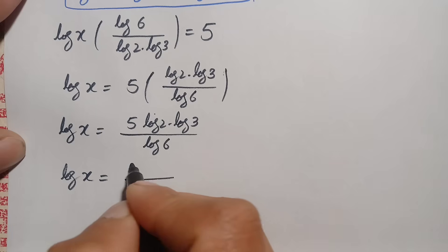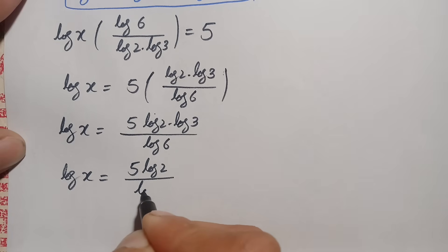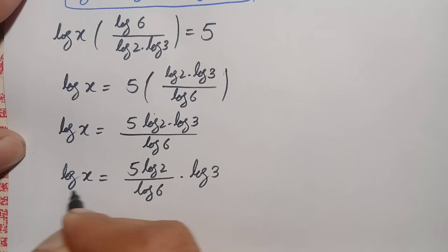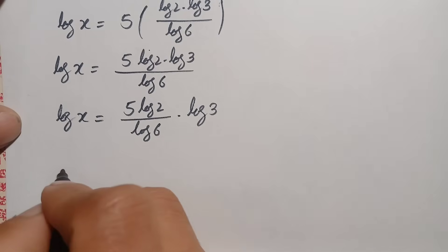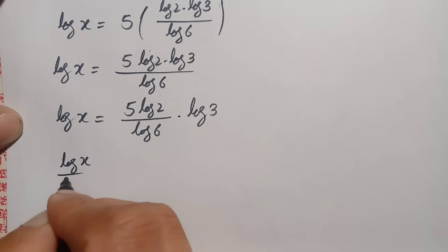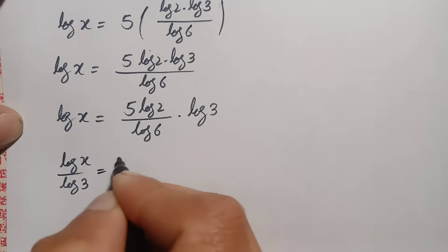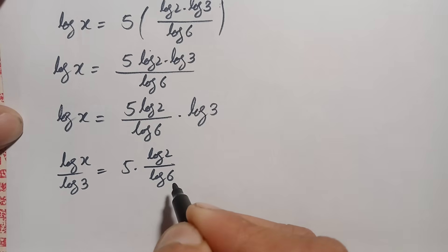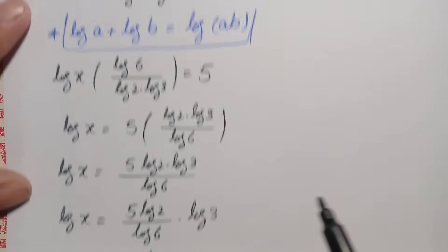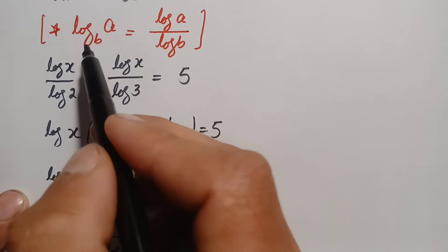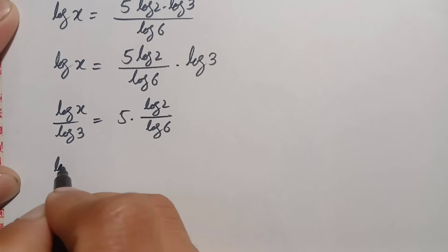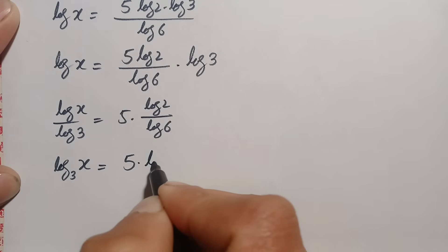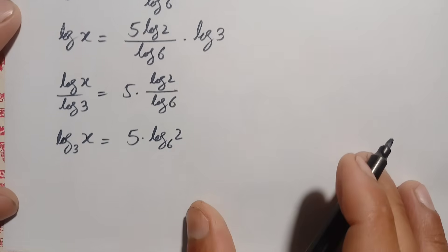In approach 1, we rewrite the right hand side as 5 times (log of 2 divided by log of 6) times log of 3. Moving log of 3 to the left side as a denominator gives: log of x divided by log of 3 equals 5 times log of 2 divided by log of 6. Using the change of base result, this becomes: log of x with base 3 is equal to 5 times log of 2 with base 6.